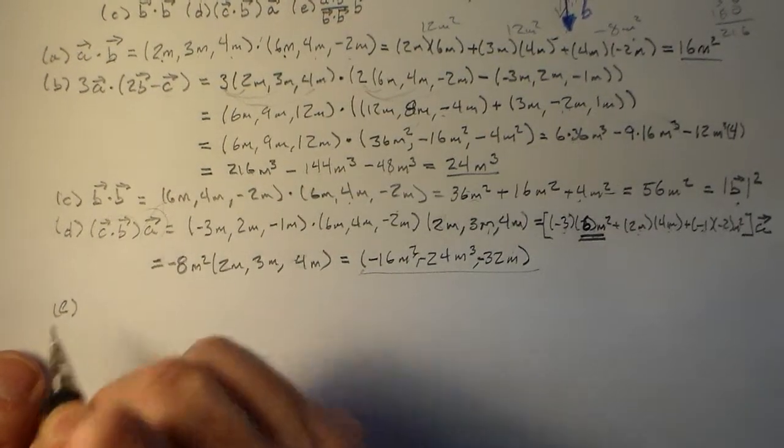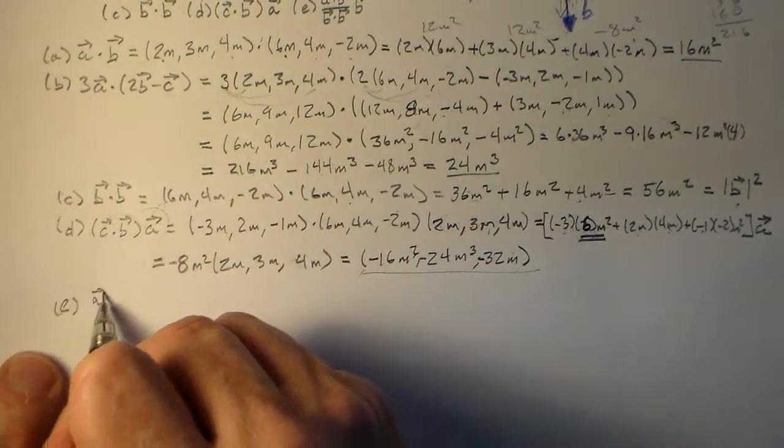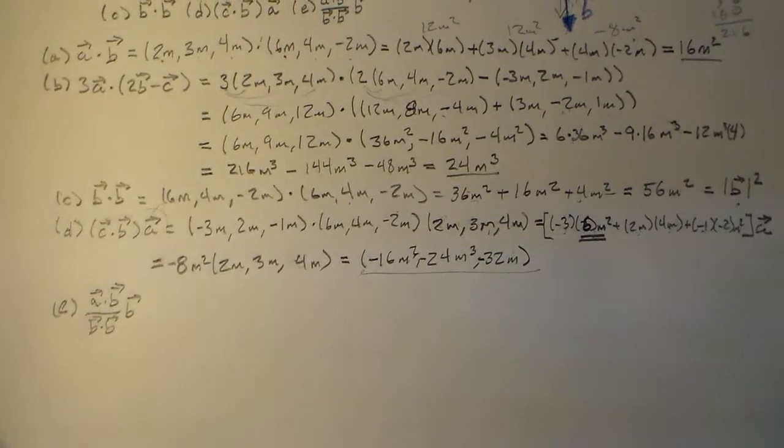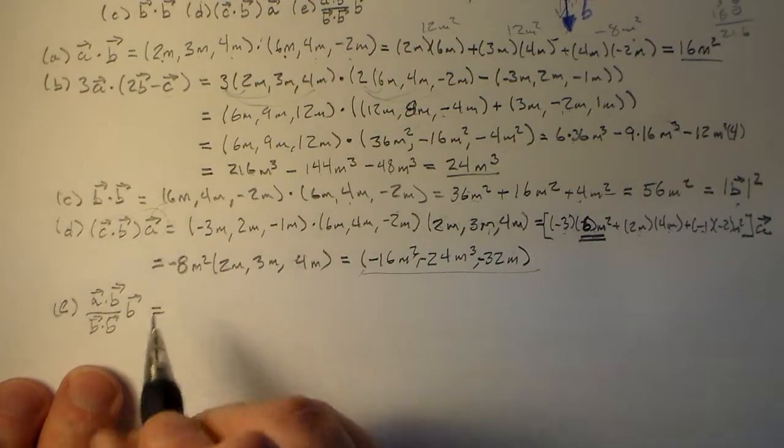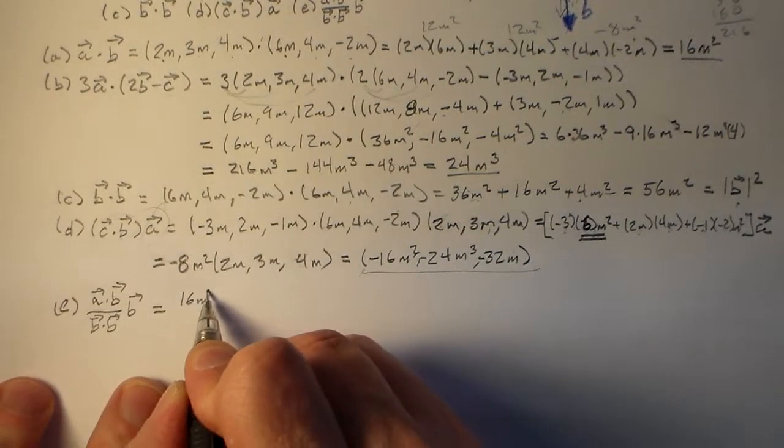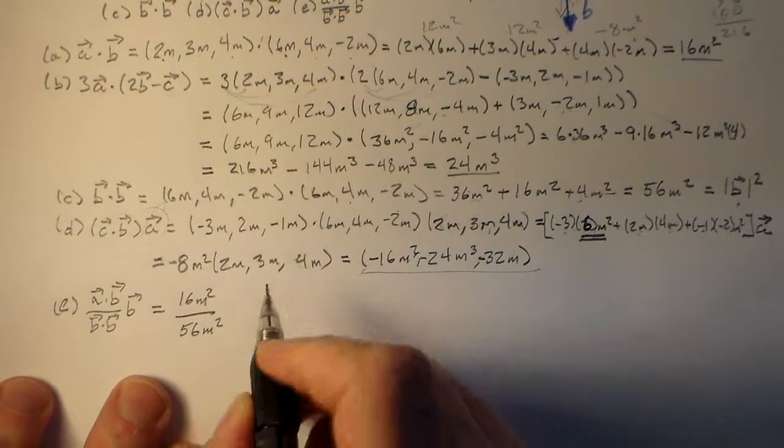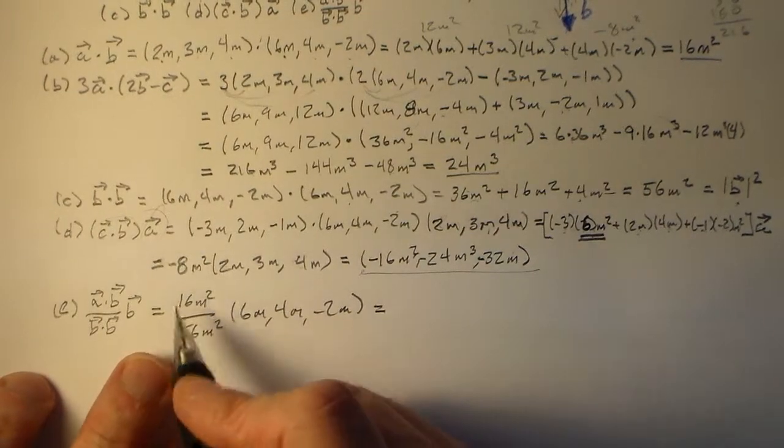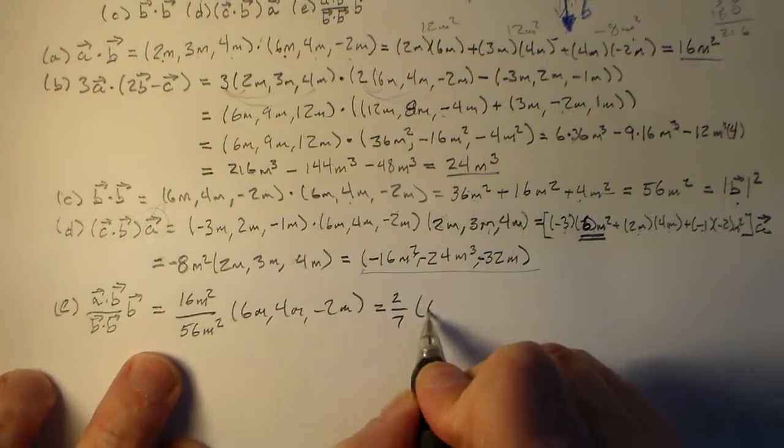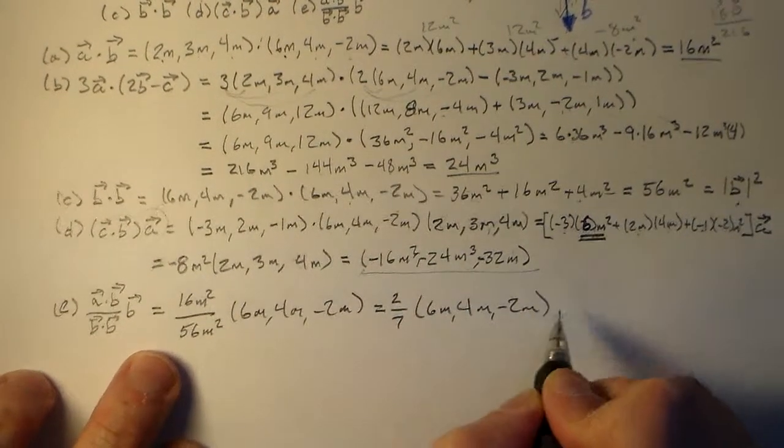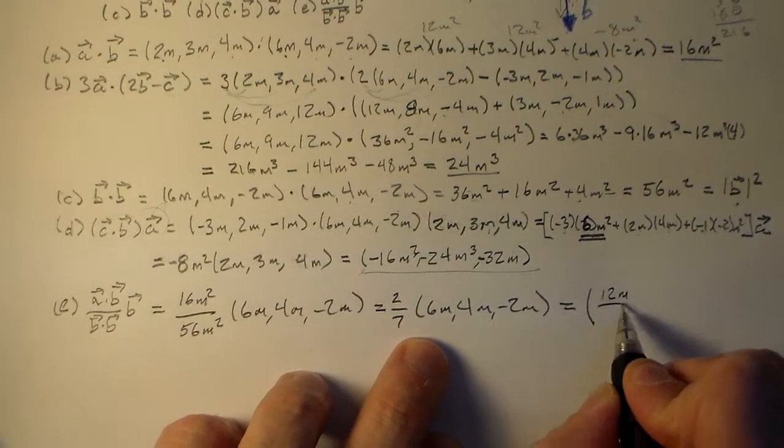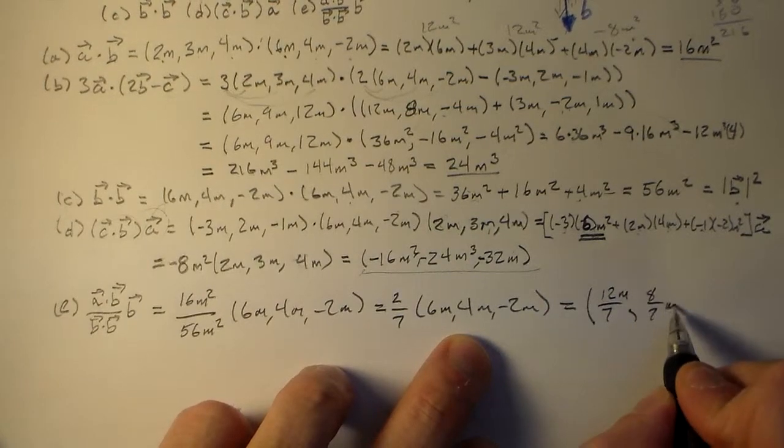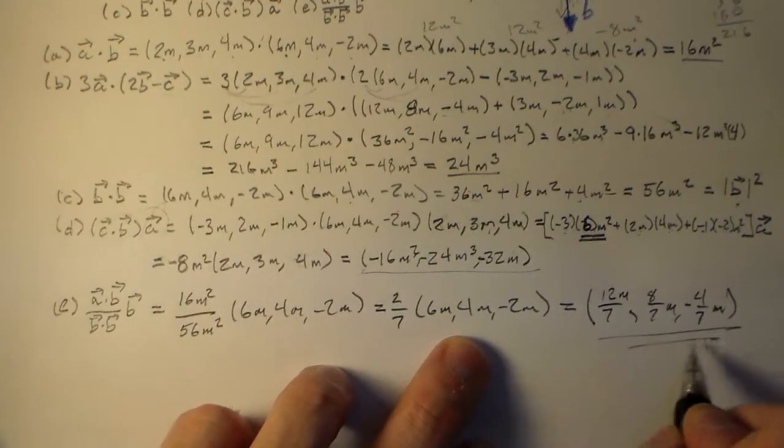And then E. E is the one you've been waiting for, because you saw this thing. Let's see. A dot B over B dot B times B. And this is going to be your friend. You're going to get to play with this a lot. And the best thing about this is I did A dot B and I did B dot B. So that's 16 meters squared, and that's 56 meters squared times B, which is (6m, 4m, -2m). And so that's equal to the ratio of these two guys, which is 2 sevenths. So (6m, 4m, -2m). And then we go through and we say, okay, we've got 12 sevenths meters, 8 sevenths meters and minus 4 sevenths meters. Plenty good. You're going to love that one.